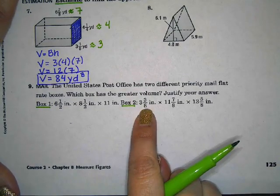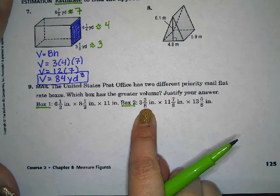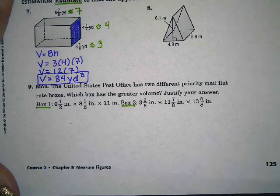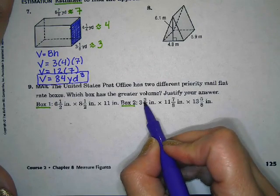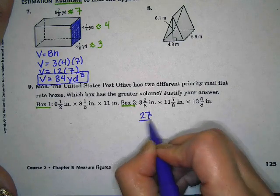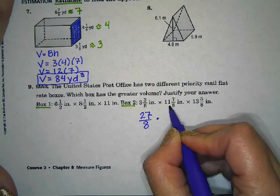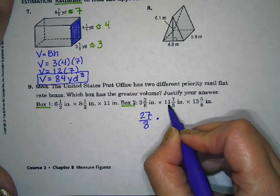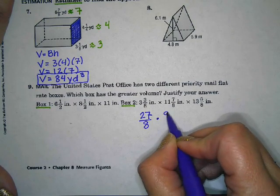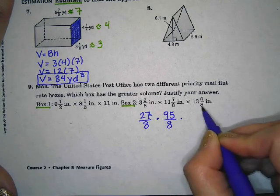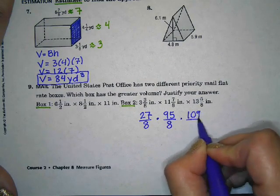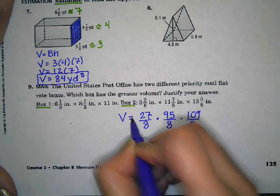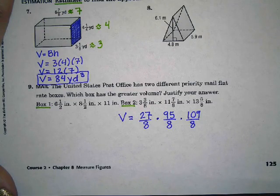Now I'm going to let you figure out box 1, and we're going to do box 2 together to get you started. Now we have some fractions here, so we have to multiply fractions. So the first thing we have is 3 and 3/8, and we need to change that to an improper fraction. So 8 times 3 is 24 plus 3 gives us 27/8. And we're multiplying that by 11 and 7/8. So 8 times 11 is 88 plus 7 gives us 95/8. And then our final fraction, we have 8 times 13 plus 5, which gives us 109/8.